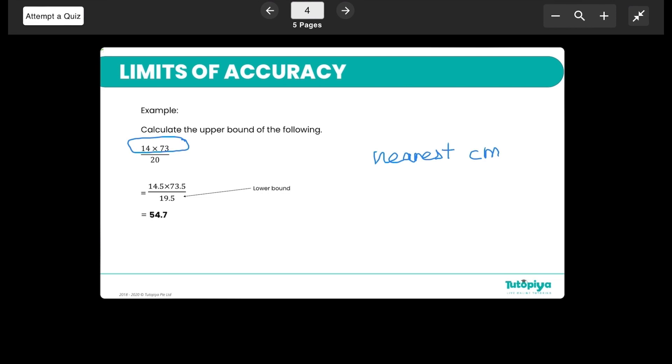That is understandable because you want the biggest possible answer. So the biggest possible answer you can get if you have the biggest possible numerator for this fraction. So if I want the biggest possible numerator here, then I have to make 14 as big as possible and 73 as big as possible, which means I'm going to take the upper limit of accuracy for both 14 and 73. So that is I'm going to take it as 14.5 and 73.5 because these two have been rounded to the nearest centimeter.